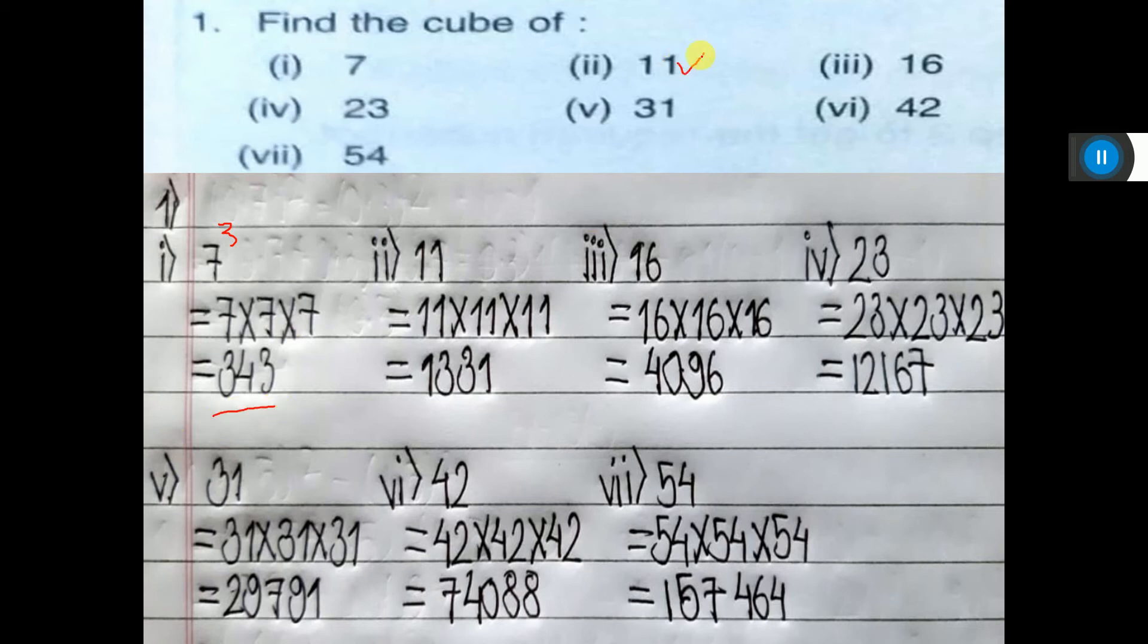Similarly, 11 cube. So here, you have to give cube. Then only it will come. Then 16 cube you have to give. Then only 16 into 16 into 16. Then this is the result.